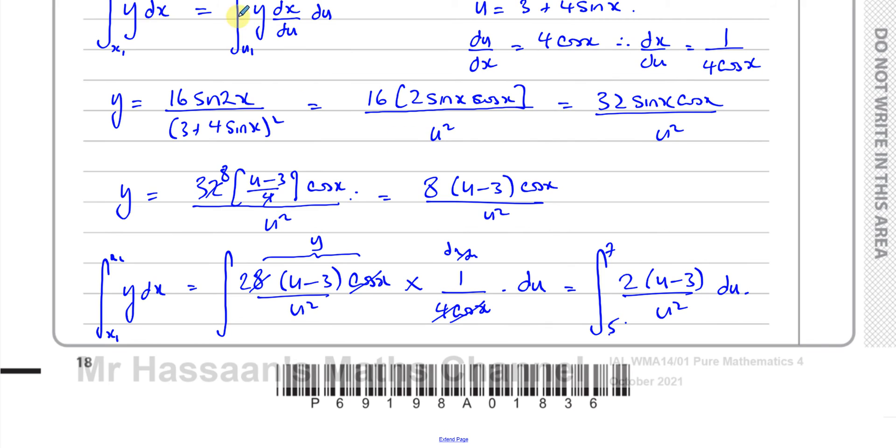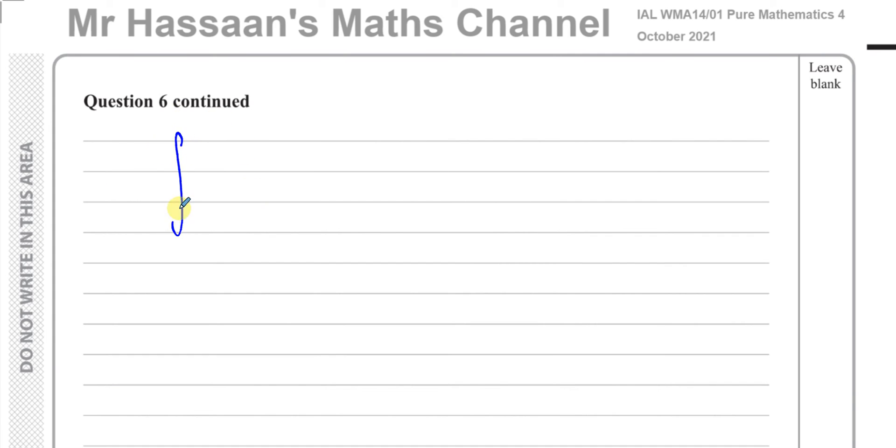We're going to integrate that there. So I'll write it out as 2(u - 3)/u². So I have 2(u - 3)/u² with my limits 7 and 5. I've got to integrate that with respect to u. So now what I will do is to make this a bit simpler, I'm going to take the 2 out. That's what I always like to do. And this is going to be u/u² minus 3/u². Now u/u² is 1/u. Minus 3/u² is 3u⁻².